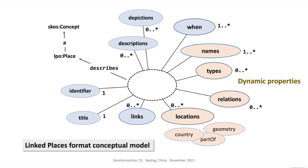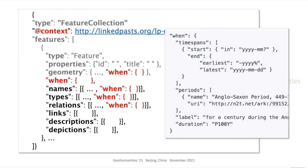Link Places extends GeoJSON by introducing a 'when' element that can be used to temporally scope an entire feature or any of its dynamic attributes — things about a place that can change over time: its names, geometries, types, or relations. For WHG, most elements of the format are optional. Only a single name, its source, and an attestation date are absolutely required, though many other elements are highly encouraged.